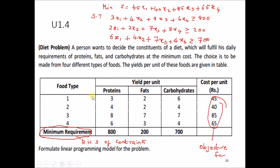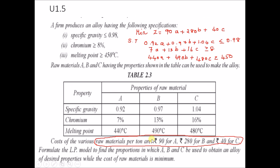In this way, many students will misinterpret the question. You have to see the keywords and write accordingly. Now let's move on to another type of problem where a firm produces an alloy having the following specifications: specific gravity less than or equal to 0.98, chromium greater than or equal to 8 percent, melting point greater than or equal to 450 degrees Celsius. The raw materials are A, B, C and a table is given.